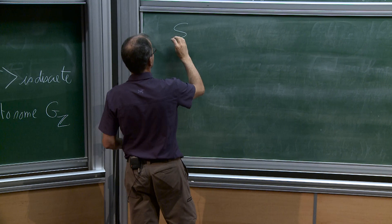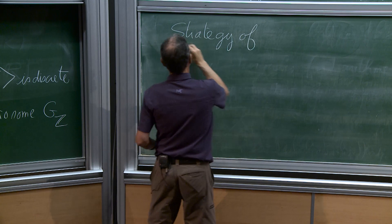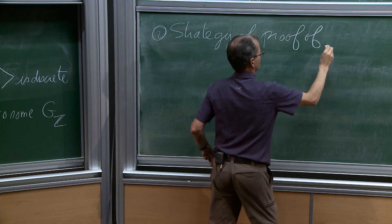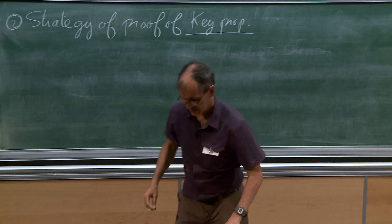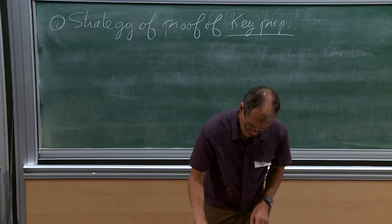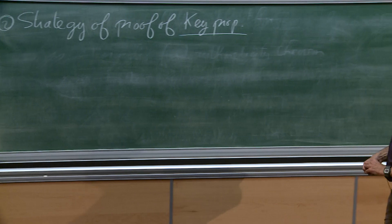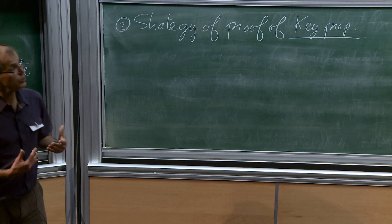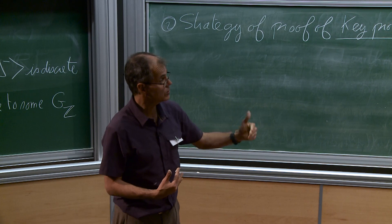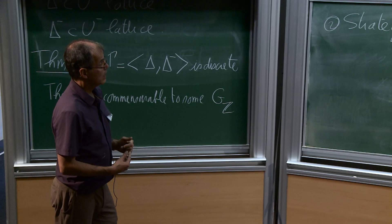Now we forget about all these words. What is the strategy of proof? That is the key proposition. I will state two lemmas. I need some notation. I'm working with SL₄(ℝ), but I want to keep the notation kind of general, because I think it helps to understand the proof better than specializing too much.